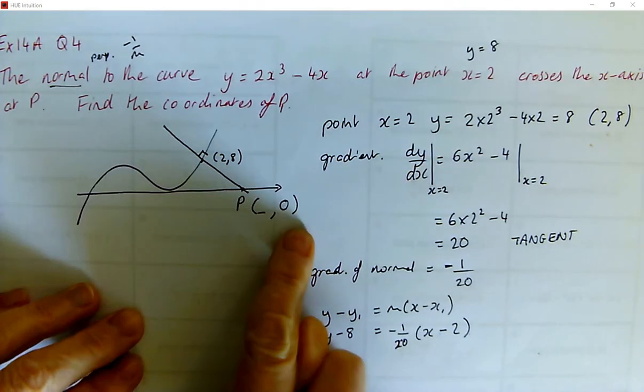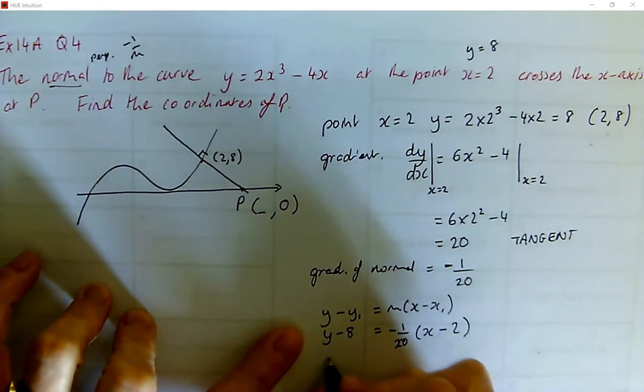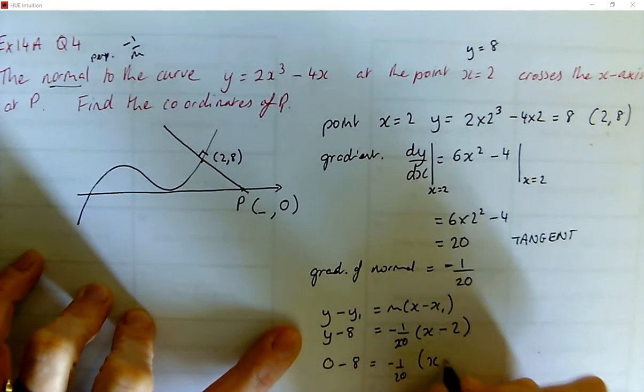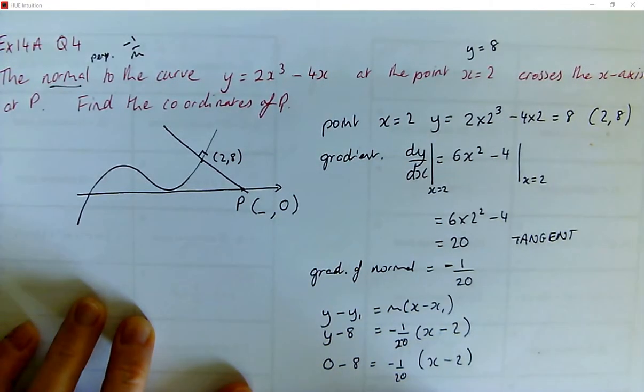We don't know the x number, but we know the y number. So we can put 0 minus 8 is minus 1/20 of (x minus 2), and we can solve that equation.